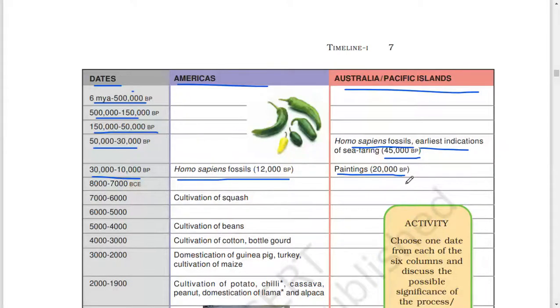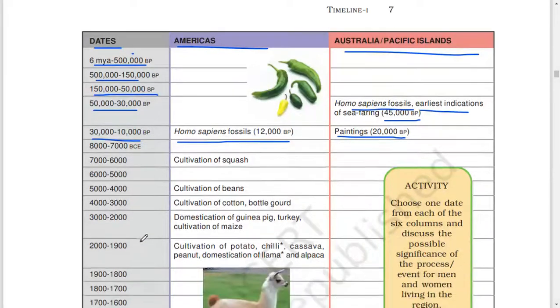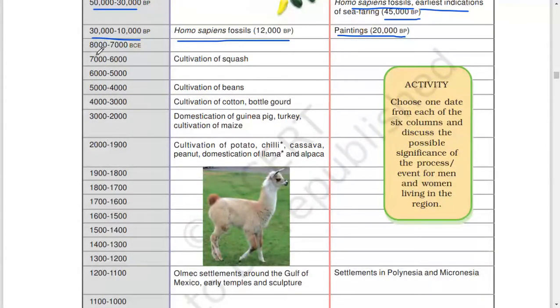Paintings, 20,000 BP. 8,000 to 7,000 BCE, 7,000 to 6,000: cultivation of squash. 6,000 to 5,000, 5,000 to 4,000: cultivation of beans.